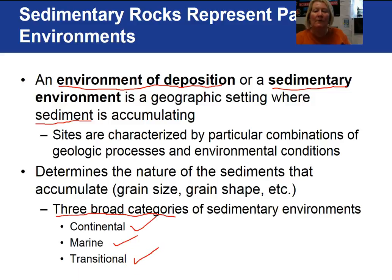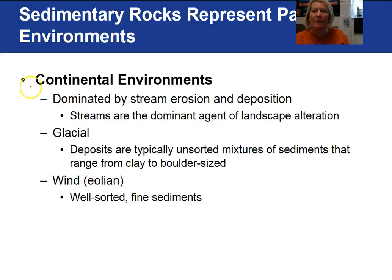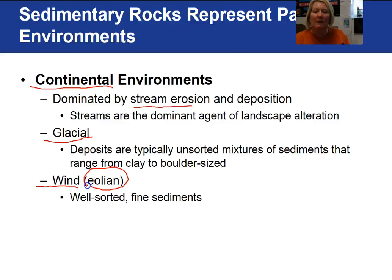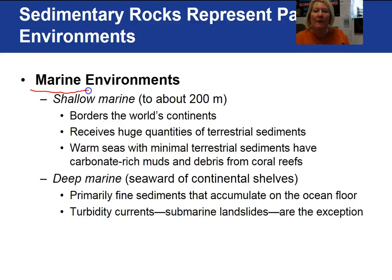Starting with our continental depositional environments, it is really dominated by stream erosion and deposition. We can also have glacial deposits and wind-blown deposits, what are referred to as aeolian.